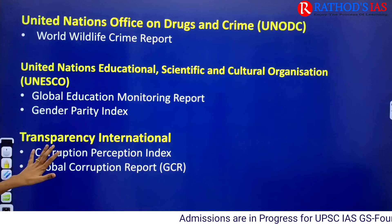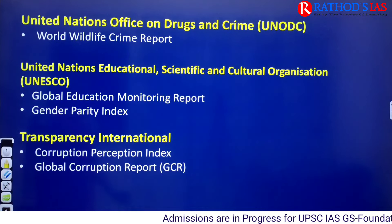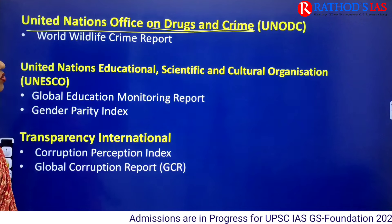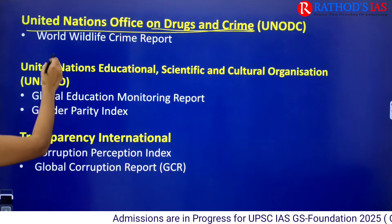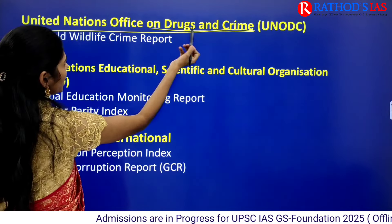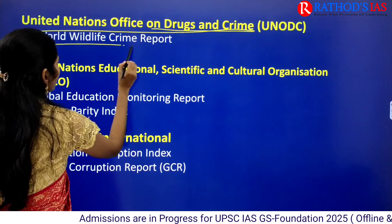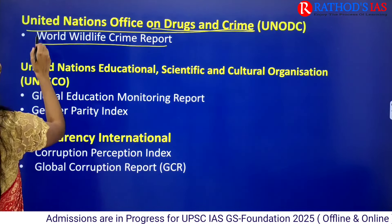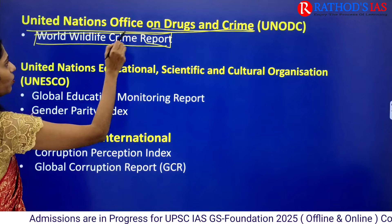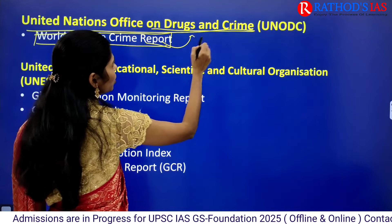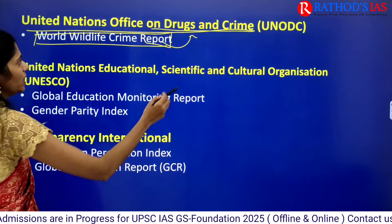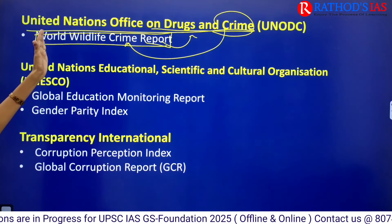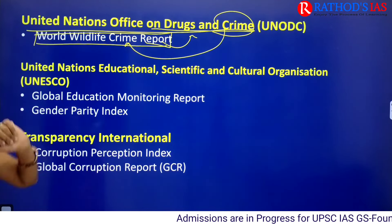Next is UNODC — United Nations Office on Drugs and Crime. It releases the World Wildlife Crime Report. The connection is straightforward: crime is in the organization's name, and it monitors wildlife crime.